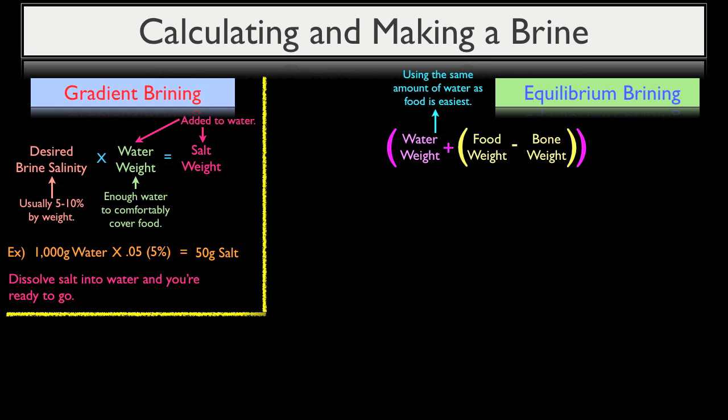Now, once you've added the water weight to the weight of the food, simply multiply that amount by your desired finished salinity. This means that if you want your brined food product to contain 1% salt when the brining process is complete, you would multiply the combined weight of the water and the food by 0.01, or 1%, and this equation results in the amount of salt you need to create your equilibrium brine.